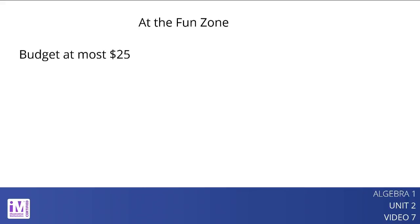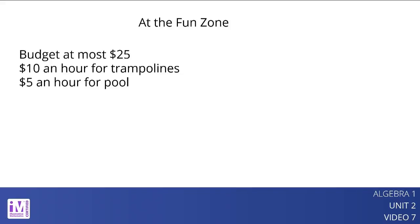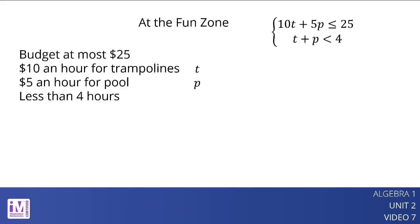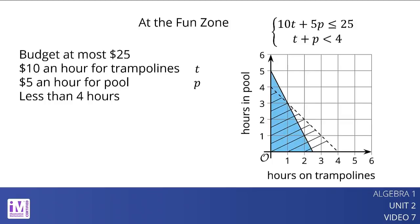Let's look at an example. A family has a budget of at most $25 to spend on activities at the fun zone. It costs $10 an hour to use the trampolines and $5 an hour to use the pool. The family can stay less than 4 hours. Let t represent the time in hours on the trampolines and p represent the time in hours in the pool. The constraints can be represented as: 10t plus 5p is less than or equal to 25, and t plus p is less than 4. The solution set to the system is represented by the region where the shaded parts of the two graphs overlap. Any point in that region is a pair of times that meets both the time and budget constraints.